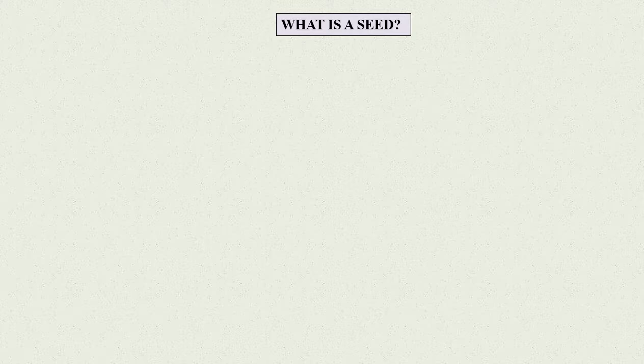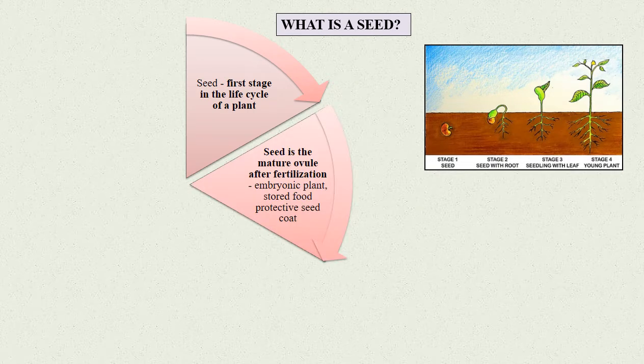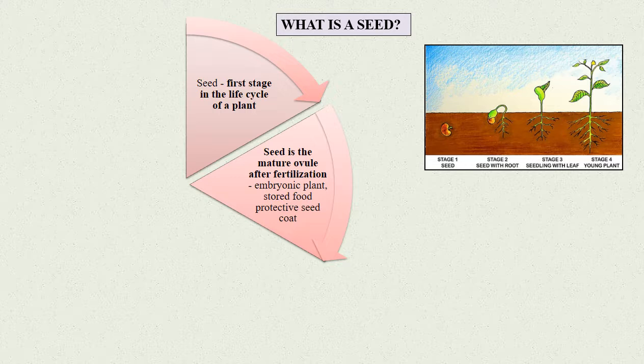What is a seed? A seed is the first stage in the life cycle of a plant. A seed is the mature ovule after fertilization which contains an embryonic plant.